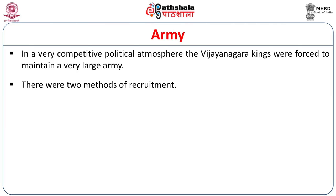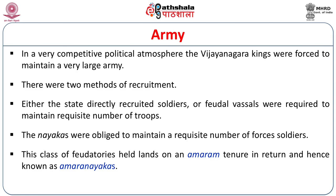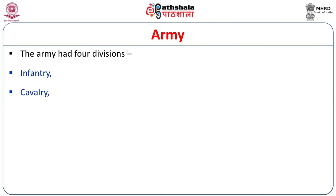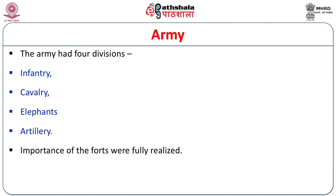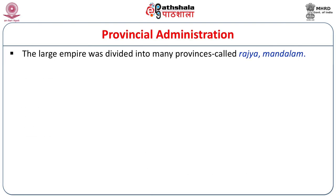In a very competitive political atmosphere, the Vijayanagara kings were forced to maintain a very large army. There were two methods of recruitment: either the state directly recruited soldiers — Krishna Devaraya himself had a large standing army — or feudal vassals were required to maintain a requisite number of troops. The Nayakas had to maintain troops in lieu of the Amaram grant. The army had four divisions: infantry, cavalry, elephants, and artillery. The importance of forts was fully realized, and the rulers appointed Telugu Brahmins from their own homelands as commanders of fortresses, also known as Durga Danda Nayakas or Niyogi Brahmins, in all parts of the empire.